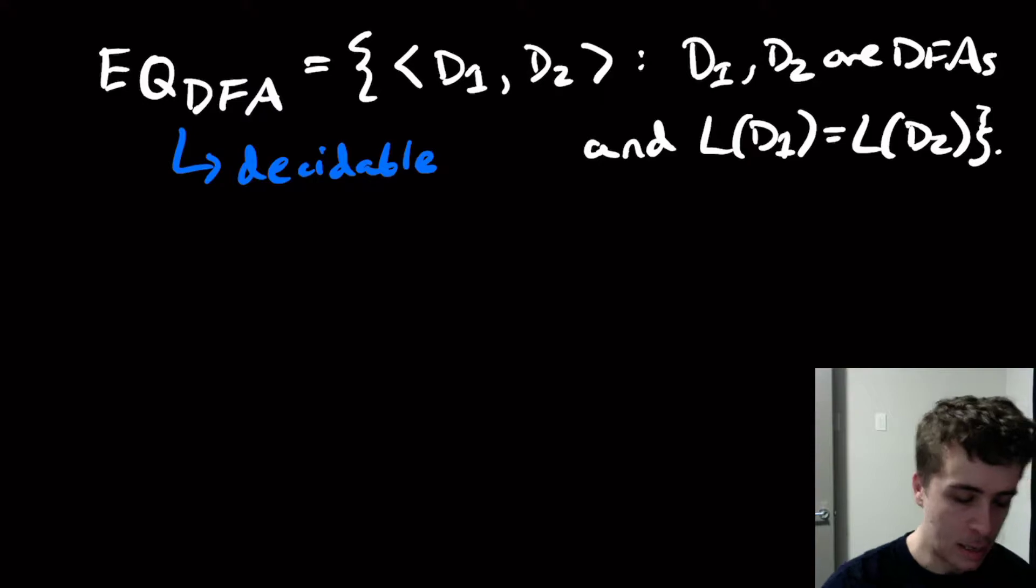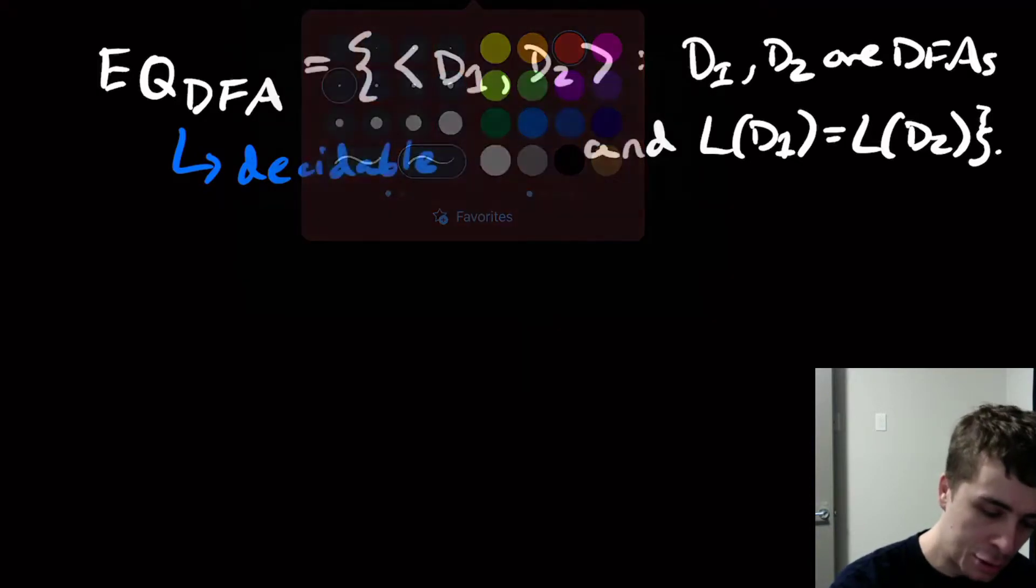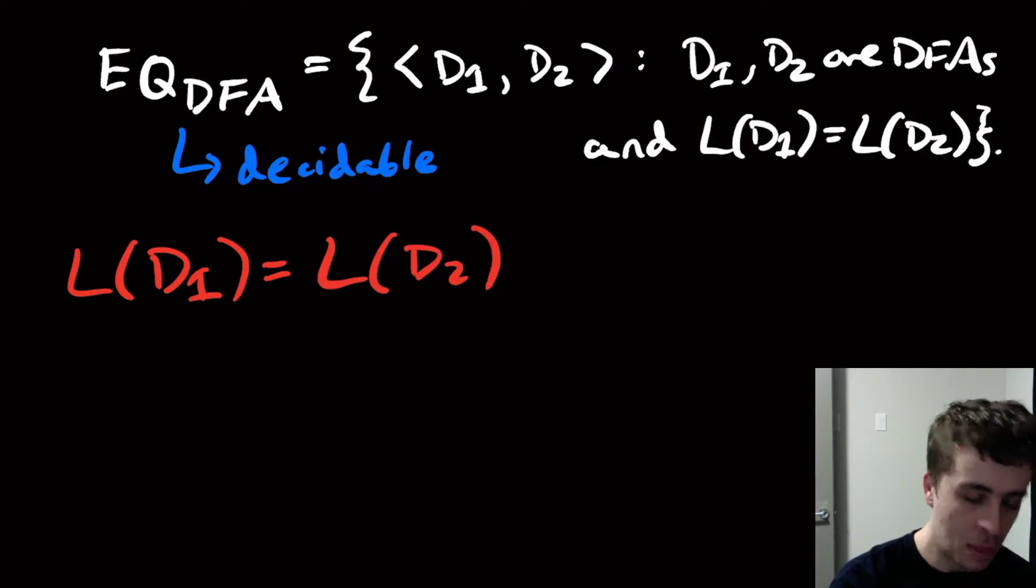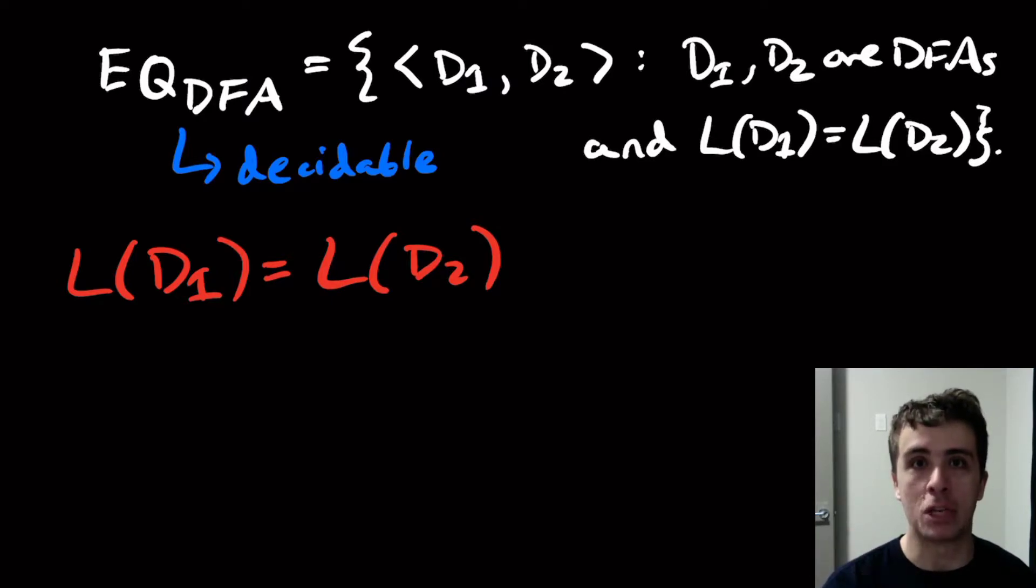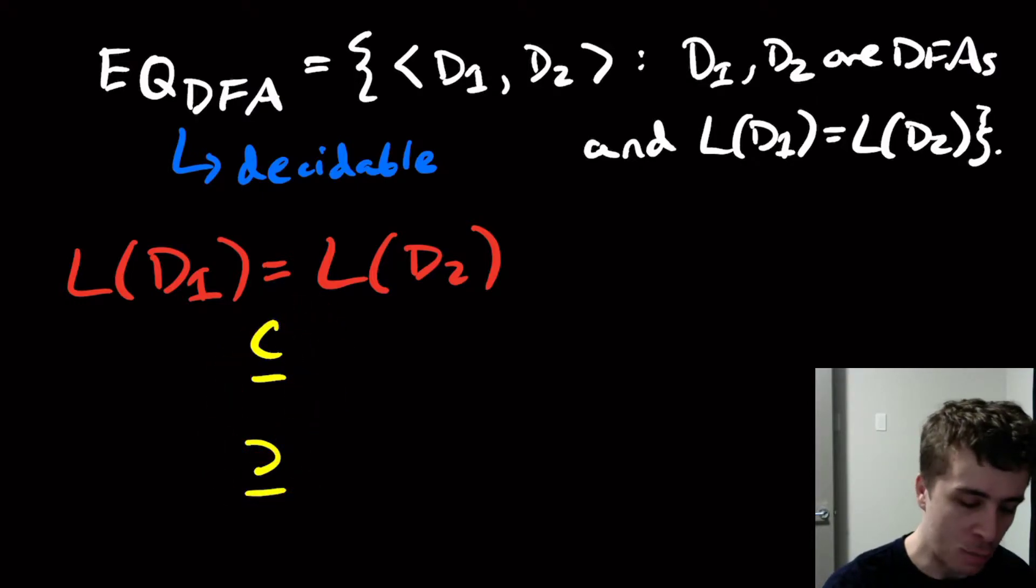One fact that we can use is, what does equality really mean? If I have the two languages being the same, the most obvious way of checking that they're the same is to show that one is a subset of the other, and vice versa. So L(D1) is a subset of D2, and D1 contains D2. If each one is a subset of the other, then they must be equal.